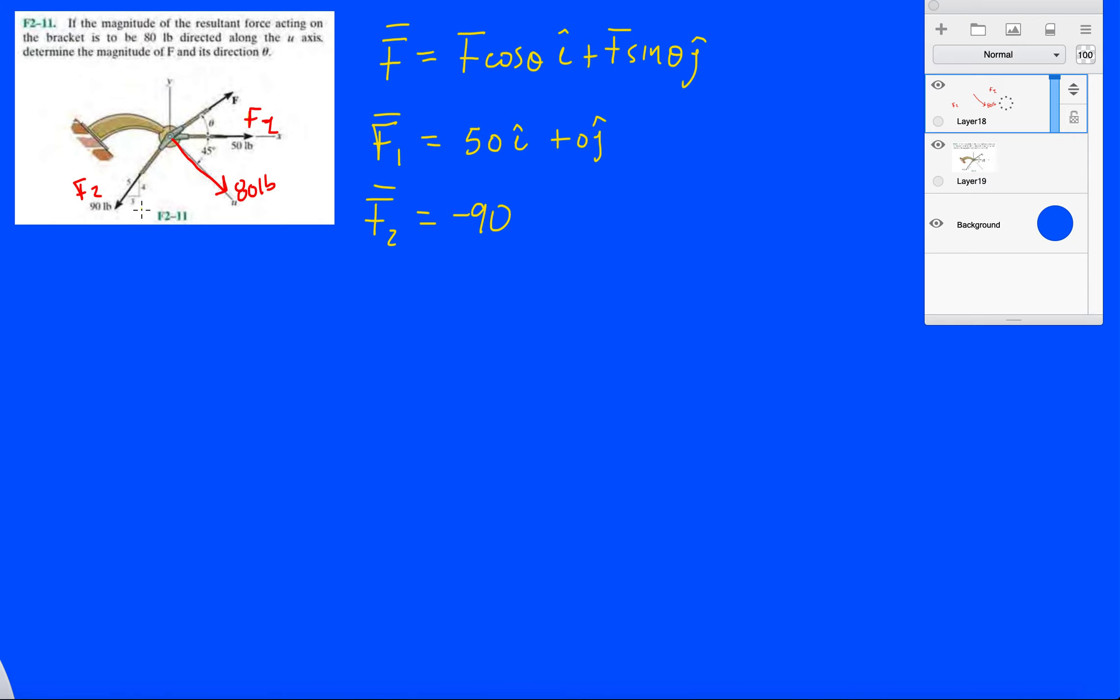Now, what side is parallel to the x-axis? That'll be our i component, minus 90 times 4/5ths i, and then minus 90 times 3/5ths j.